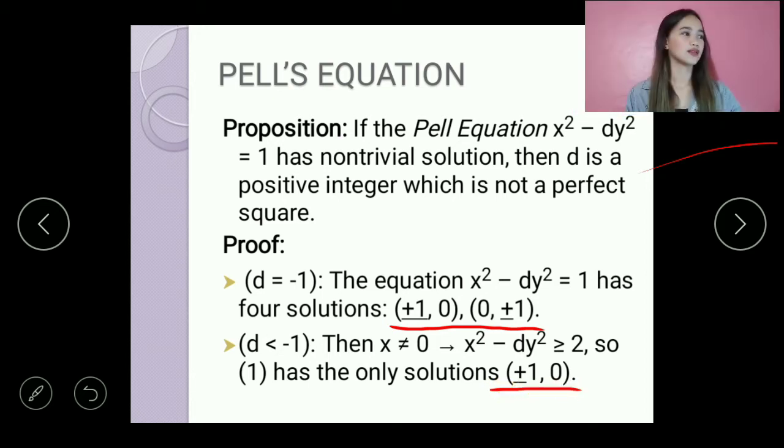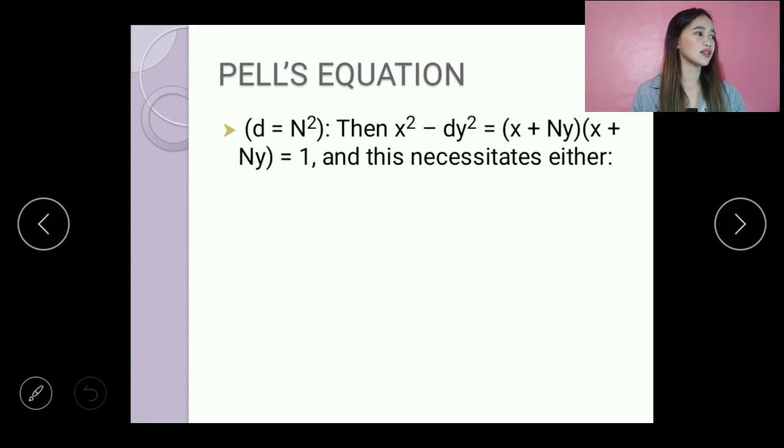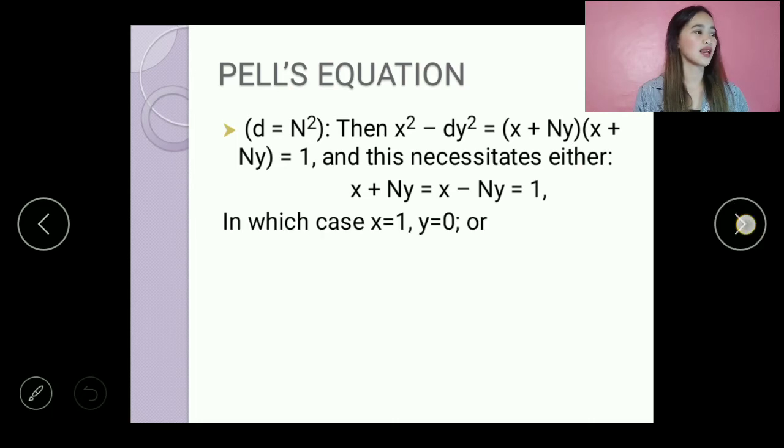And the last is if d equals n squared, then x squared minus dy squared equals (x + ny)(x - ny) equals 1. And this necessitates either x + ny equals x - ny equals 1, in which case x equals 1, y equals 0.